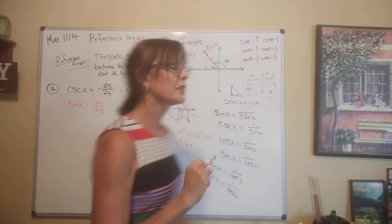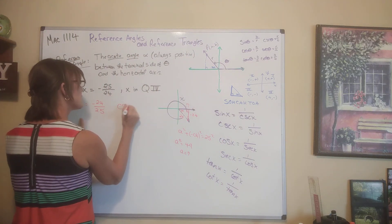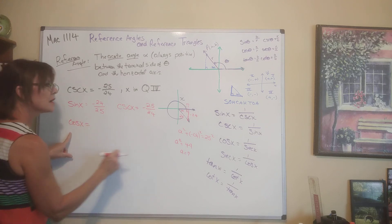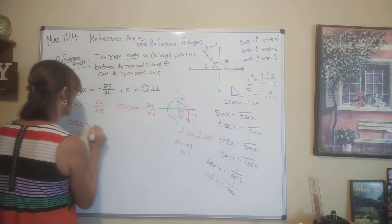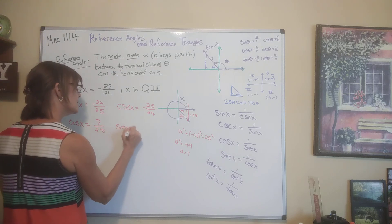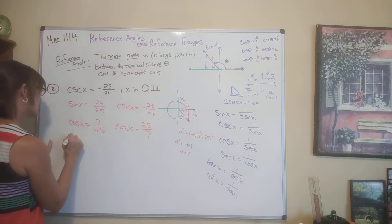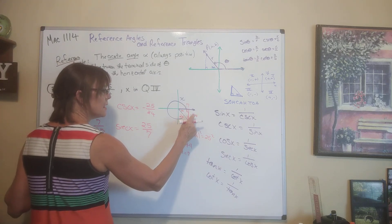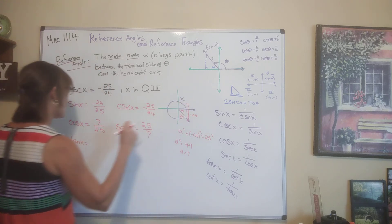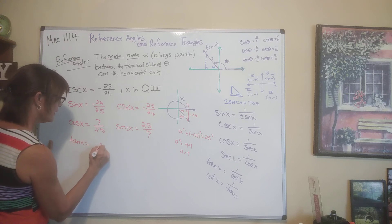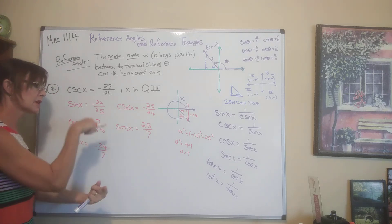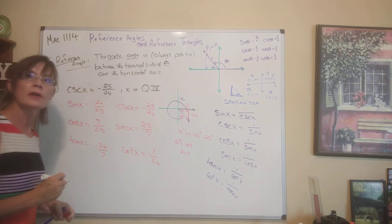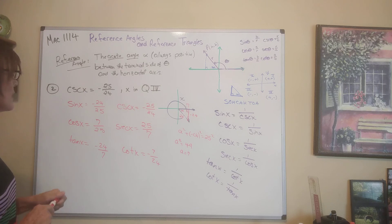Now find all trig functions quickly. Sine is negative 24 over 25, cosecant is its reciprocal negative 25 over 24. Cosine is adjacent over hypotenuse: 7 over 25. Secant is the reciprocal: 25 over 7. Tangent is opposite over adjacent — or sine over cosine — giving negative 24 over 7. Cotangent is the reciprocal: negative 7 over 24.